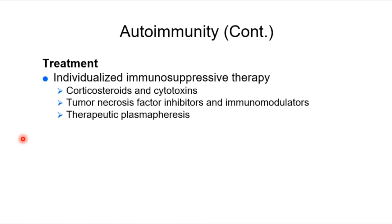When someone has an autoimmune disease, we often give them immunomodulating or immunosuppressive therapy, which makes them susceptible to developing infections. You can die of an autoimmune disease, or you can die of an opportunistic infection. When we get to HIV, the answer will be that you die of the opportunistic infection. Some autoimmune diseases are life-threatening on their own.